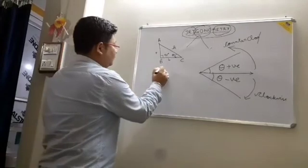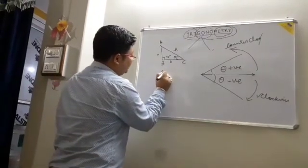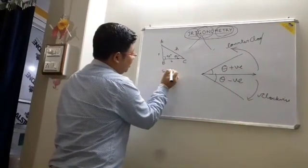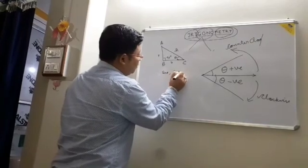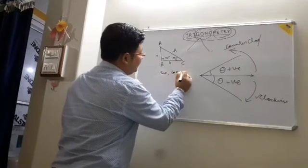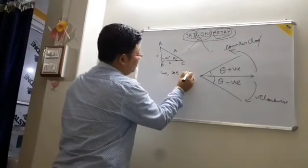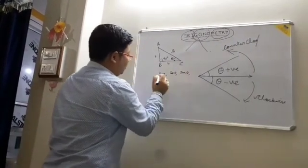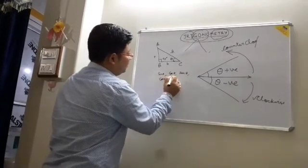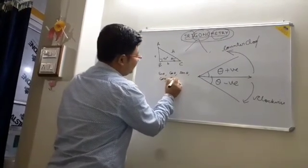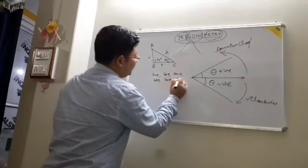The six trigonometric ratios are: sin theta, cos theta, tan theta, cot theta, sec theta, and cosec theta.